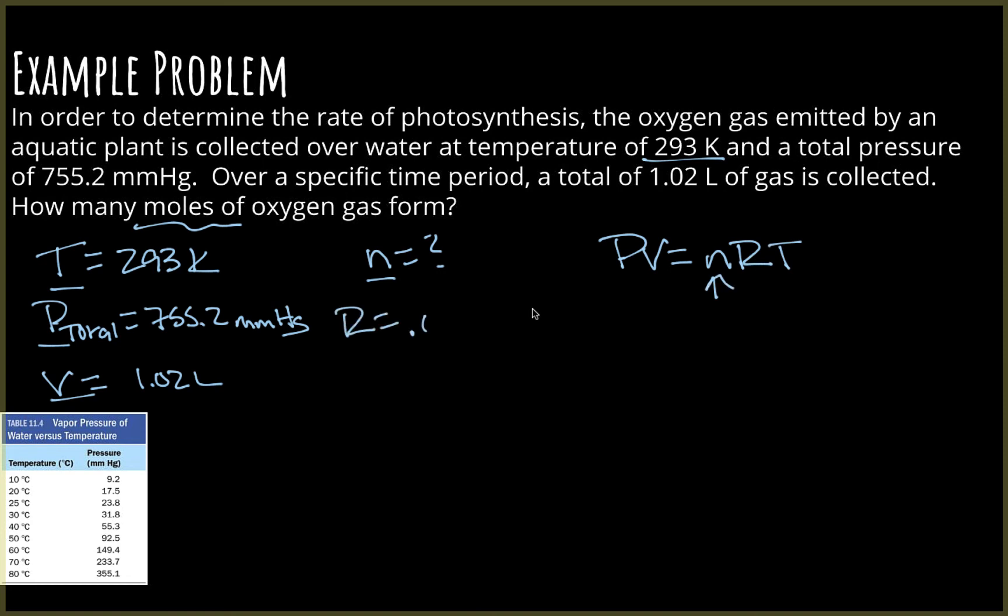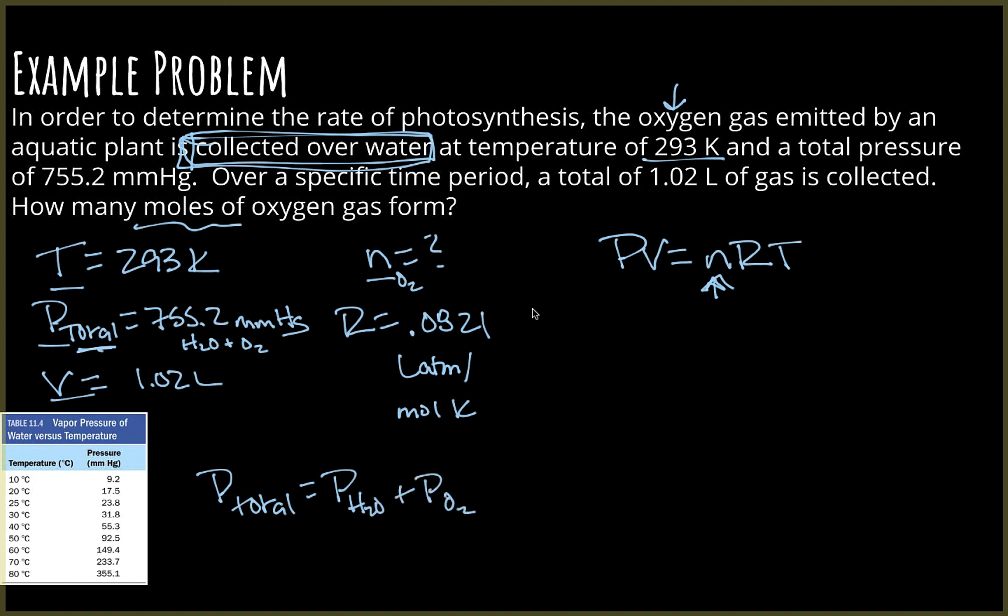We know that our R value is a constant, 0.0821 liter atmosphere per mole Kelvin. Now this is where what we just talked about comes into play. Anytime you see collected over water, that means that to get the pressure of the gas that you're talking about, which is oxygen in this case, you have to subtract out the vapor pressure of the water that's mixed with it. So this P total, that's the pressure of water plus the oxygen gas. If I'm going to solve for moles, this moles needs to be just for oxygen. So I'm going to have to do that equation. P total equals the pressure of the water plus the pressure of O2.